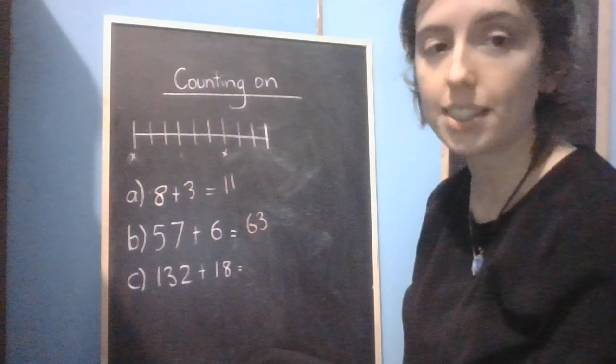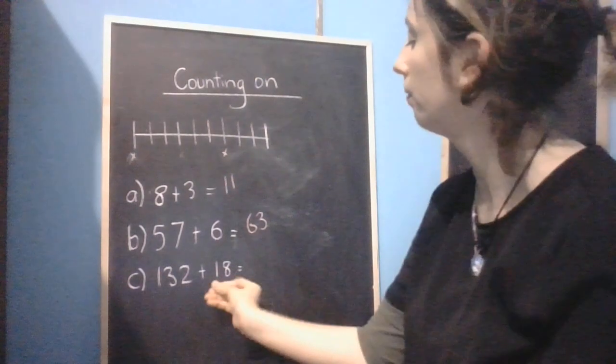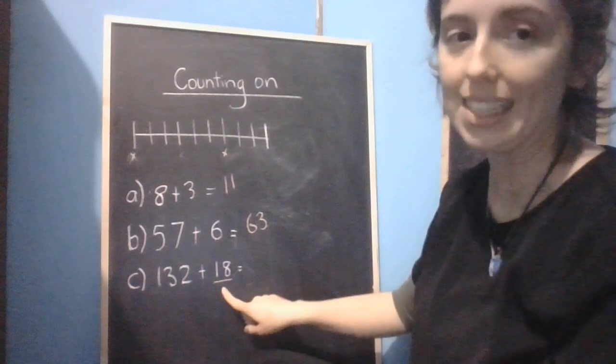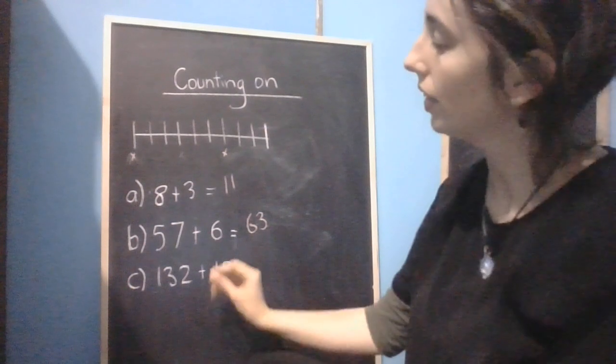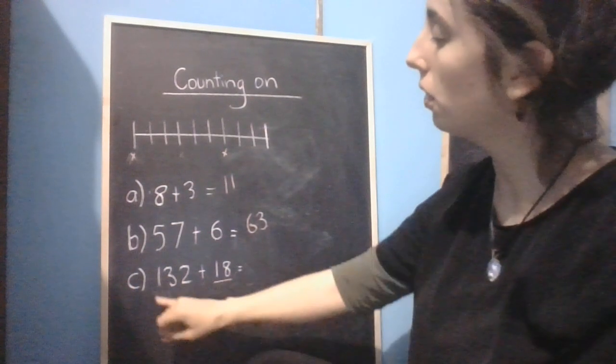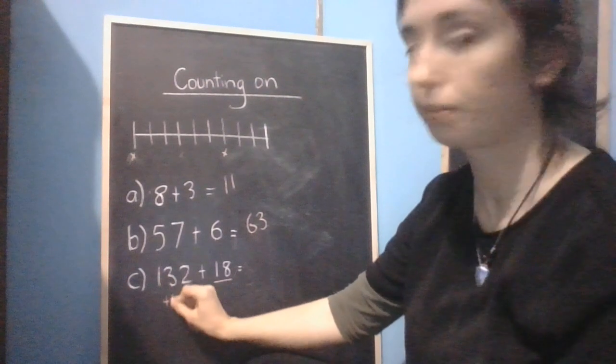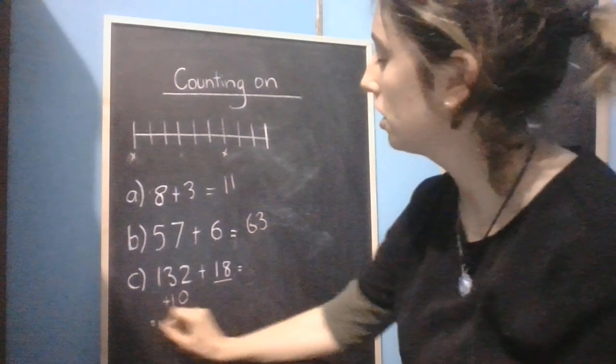Now another way you can use this strategy is you don't have to use it for the whole number. For example, if we wanted to do 132 plus 18, what we could do with this strategy is go 132 plus 10 is 142.